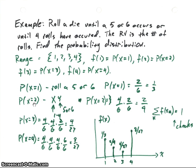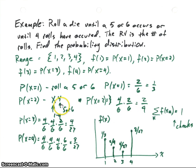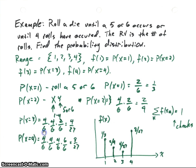For f(2), the probability that x equals 2 means we roll 1 through 4 on the first roll and then 5 or 6 on the second roll. The probability of rolling 1–4 is 4/6, and rolling 5 or 6 is 2/6, giving a probability of 2/9. For x equal to 3, we need 1–4 on the first roll, 1–4 on the second, and then 5 or 6 on the third, which works out to 4/27.